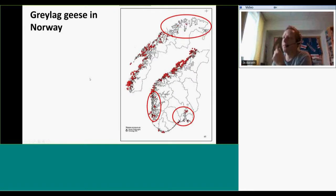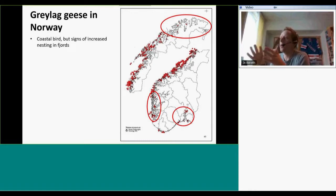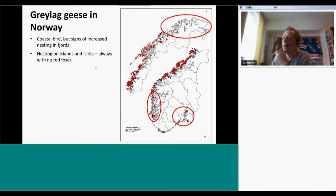In Norway it's a coastal bird but also shows signs of increased nesting into the fjords. It's nesting on islands and isolates, always with no red foxes because that's a very dangerous predator for the eggs and the bird. It lays four to six eggs, sometimes eight, and therefore it has a large potential for rapid population increase.